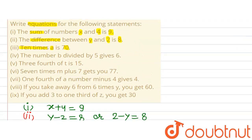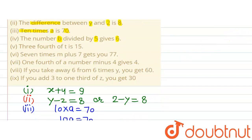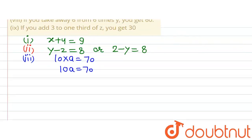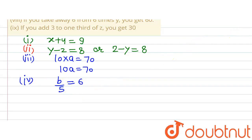The fourth part says there is a number b which is divided by 5 and this gives 6. So this will be written as b divided by 5 equals 6, that is b/5 = 6. This is the equation representing the fourth part.